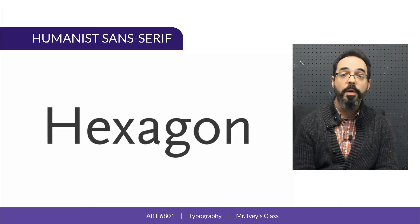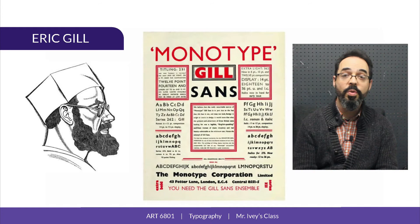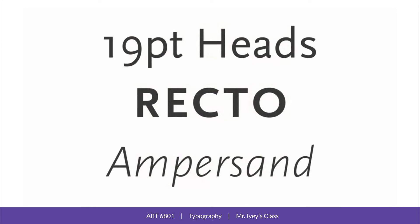One of the first and best-known humanist sans serif typefaces was Gill Sans, designed in the 1920s by British designer Eric Gill. Gill was associated with the Arts and Crafts movement, and his aim was to reconcile the classic features of old-style serif type with the clean aesthetics of sans serifs.